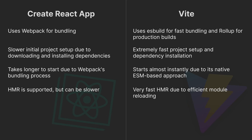In Create React App, HMR — or Hot Module Replacement — is supported but can be slower, while Vite offers very fast HMR due to efficient module reloading.